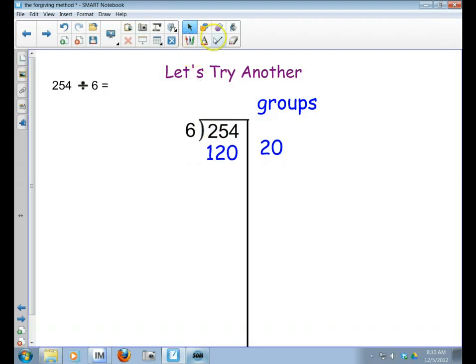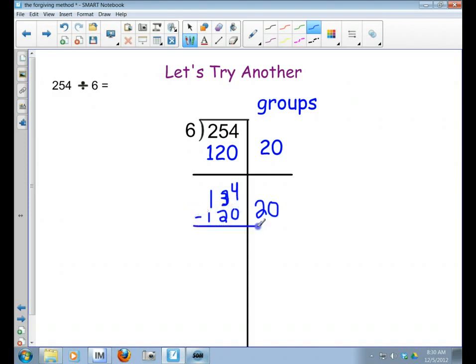All right, so now I've got my 254 minus 120. So 4 take away 0 is 4. 5 take away 2 is 3, and 2 take away 1 is 1. 134. So now I've got 134, and I just did 20 groups, which was 120. So why don't I do another 20 groups? Because 120 is less than 134. So let me try 120, take away 120 from the 134.